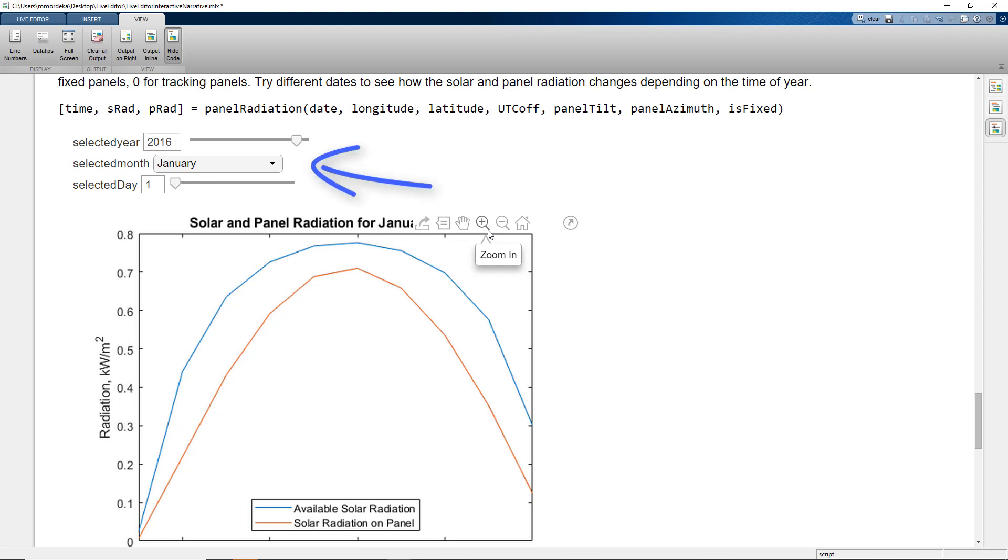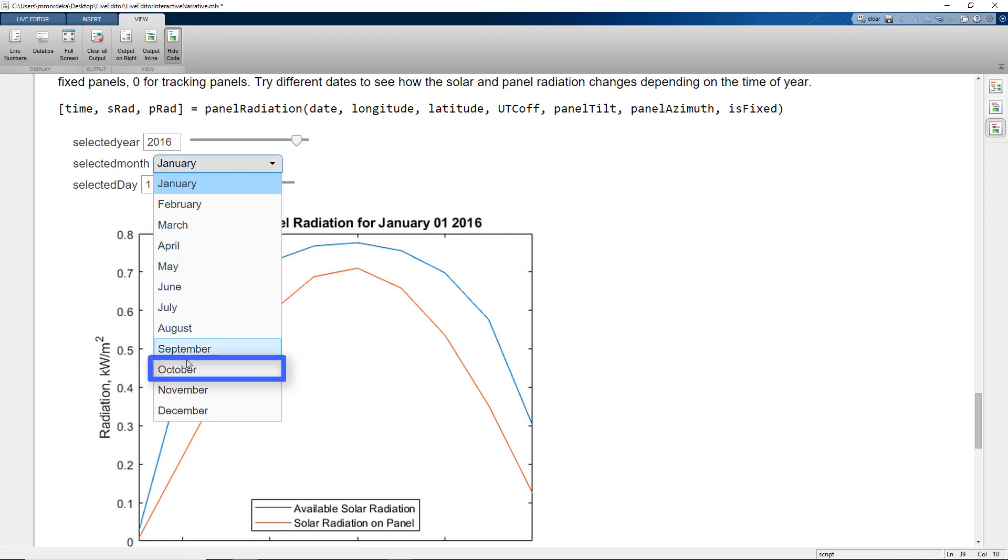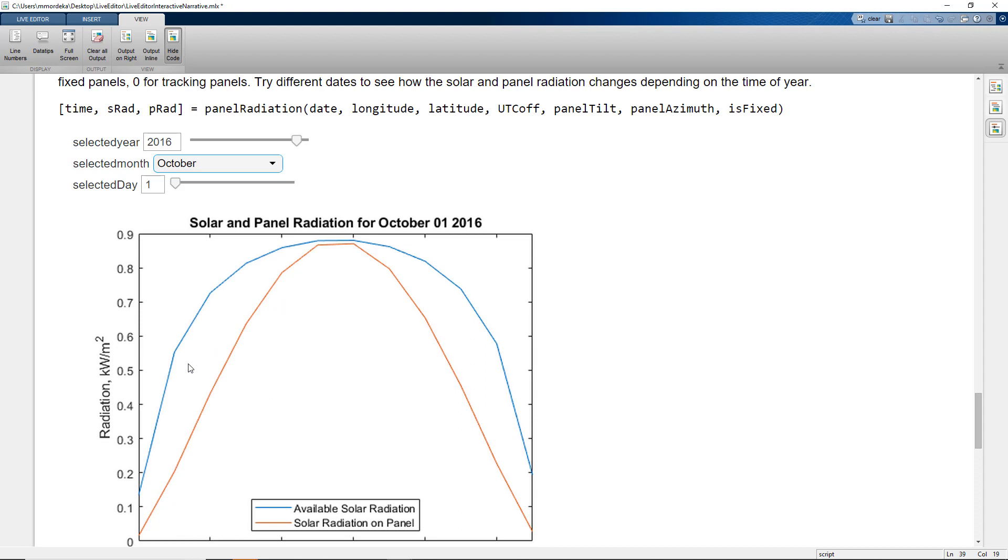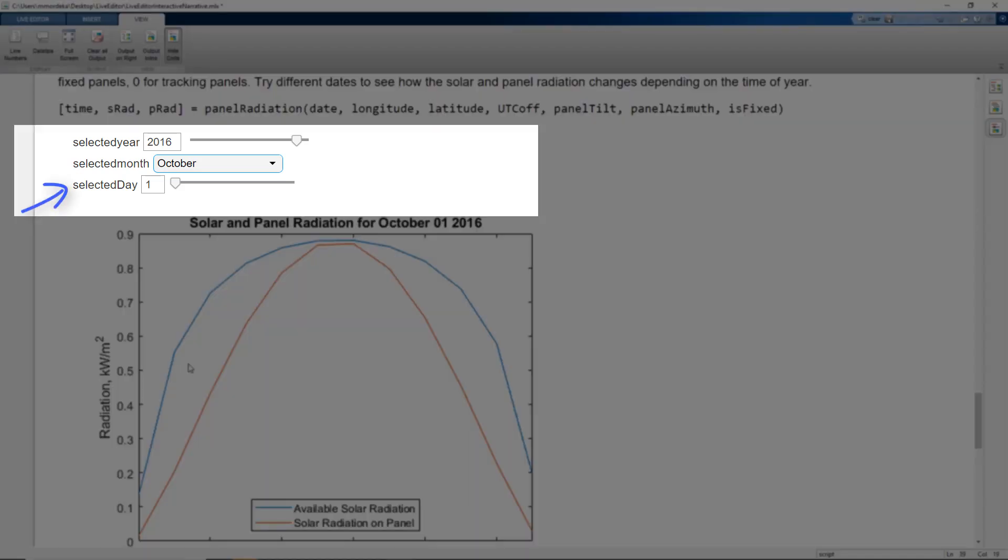For example, let's try to change the selected month from January to October. We see how the values change in the plot. We can also change the date and the year using the sliders.